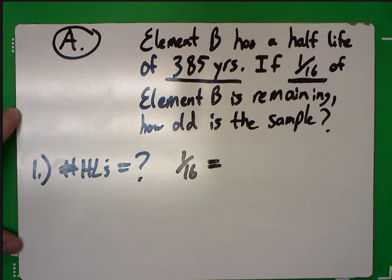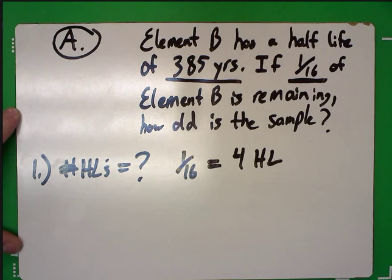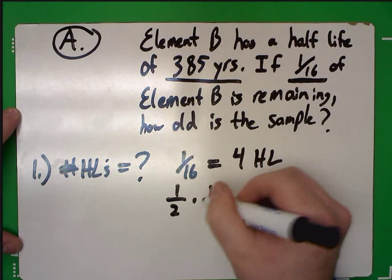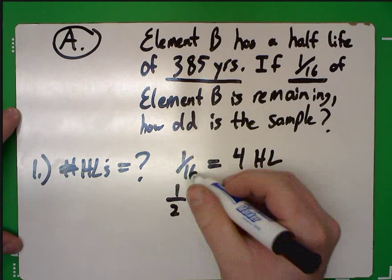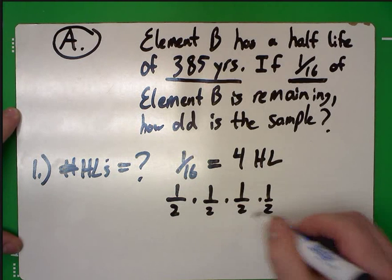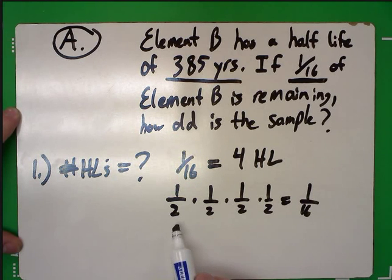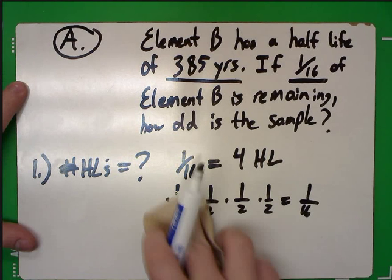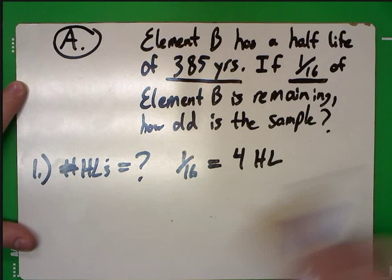Your notes will tell you that 1/16th is four half-lives. Or you could multiply 1/2 repeatedly until you get 1/16th — multiply the denominator: 2 × 2 × 2 × 2 gives 1/16th. Count up how many 1/2s you have: 1, 2, 3, 4. That's four half-lives. If you're having trouble doing the math, memorize the table — that's the quick way.